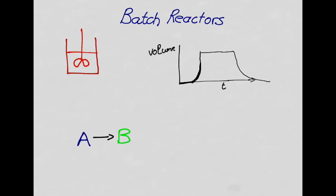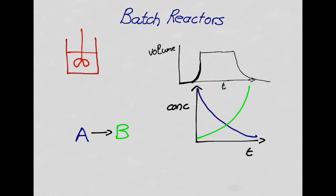Consider the reaction A goes to B. Once the reactor is filled with A at some concentration, A reacts and its concentration drops with time, while the concentration of B starts low and increases with time during the reaction. At the point when B has reached the required level — corresponding to a certain time — you then empty the reactor.